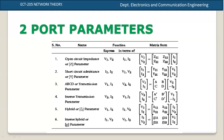You can use hybrid parameters where V1 is expressed in terms of I1 and V2. The G parameter is the inverse hybrid parameter. This also covers the inverse transmission parameters.